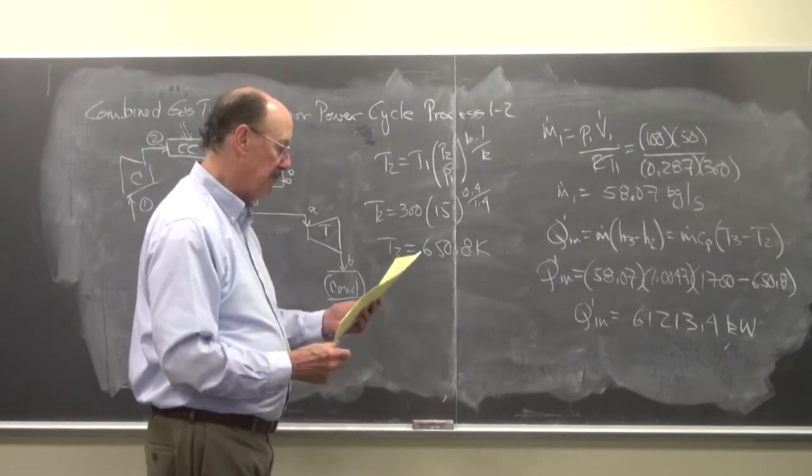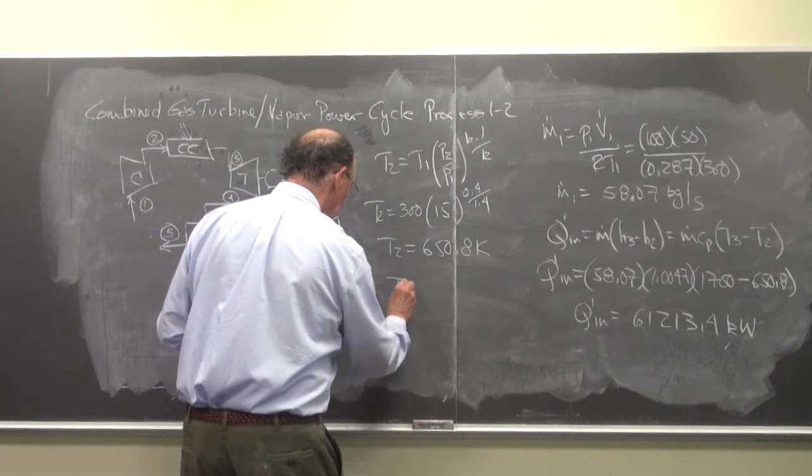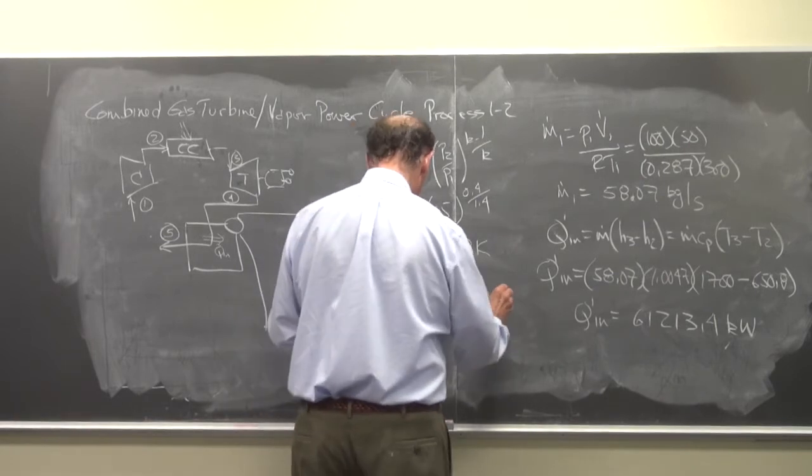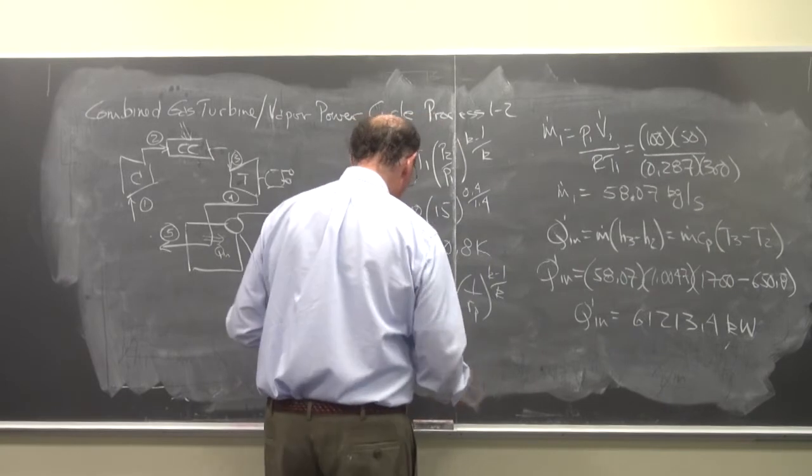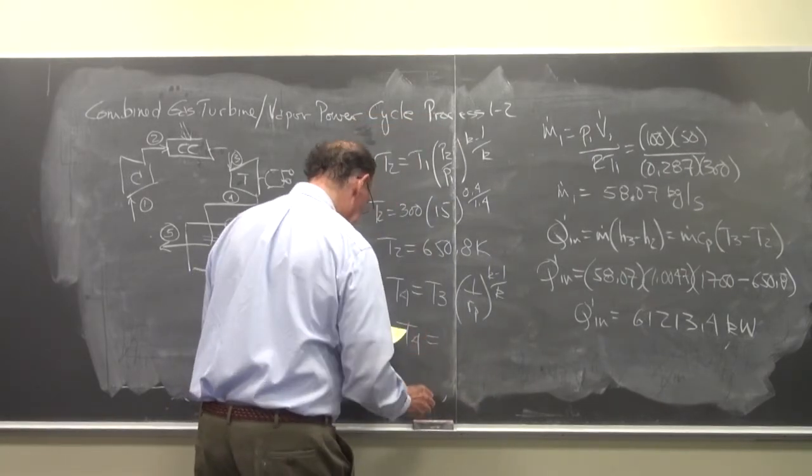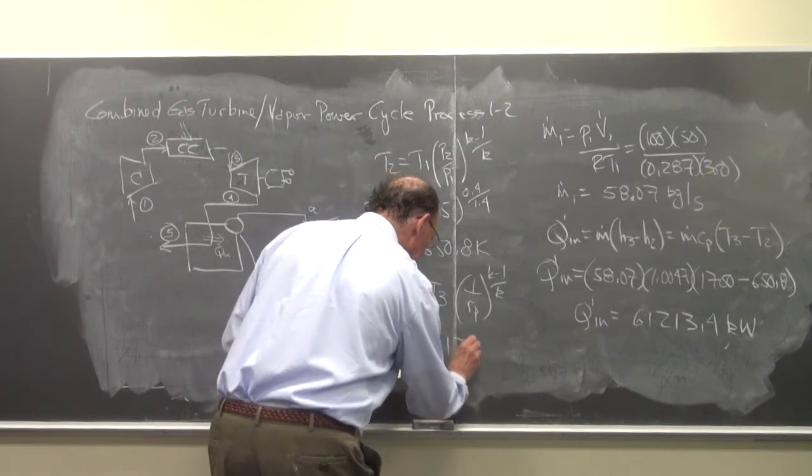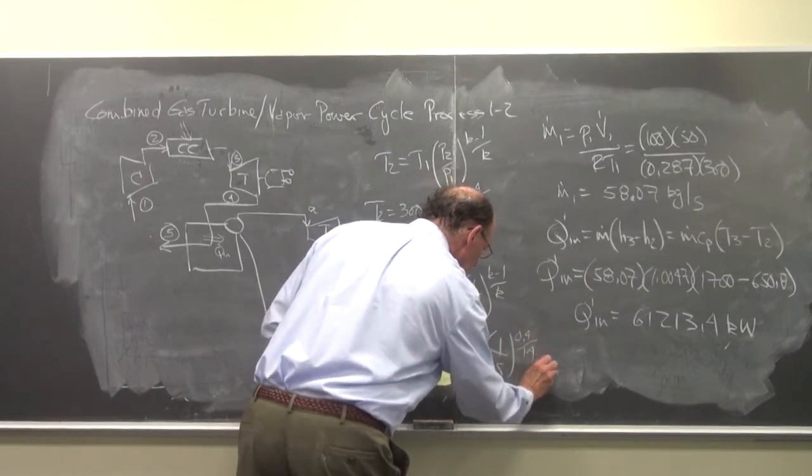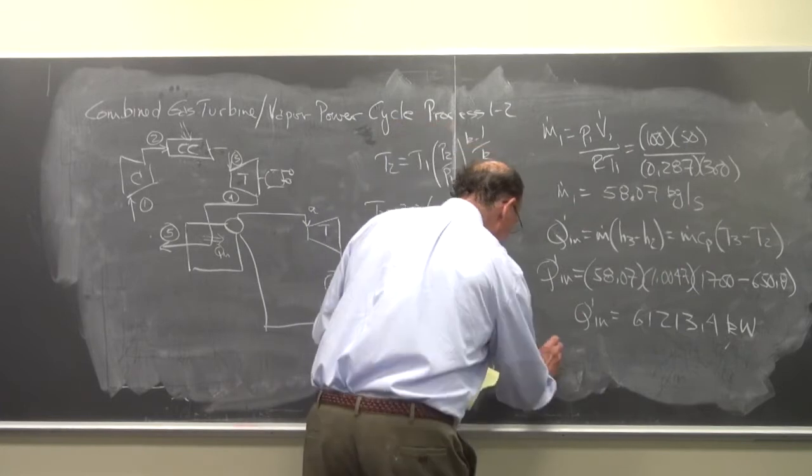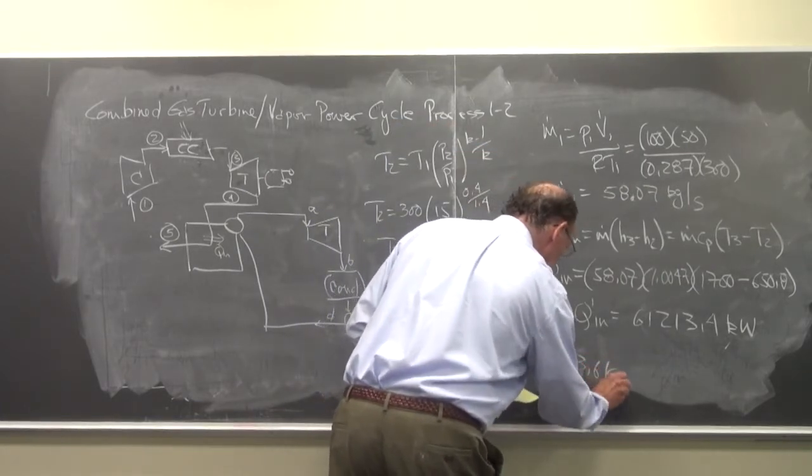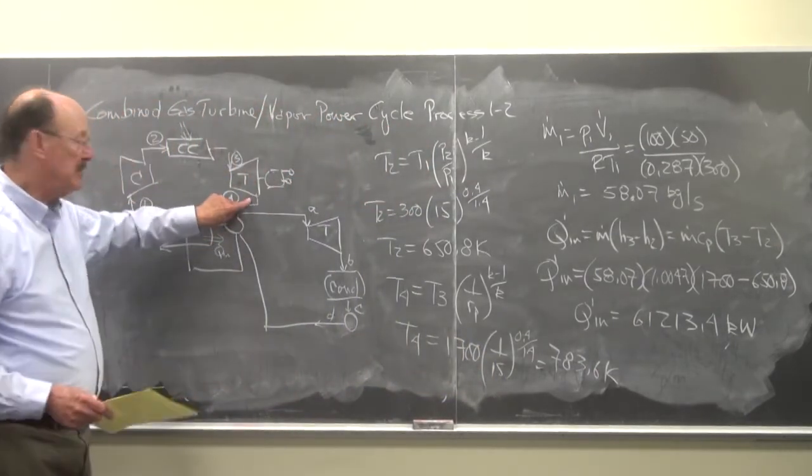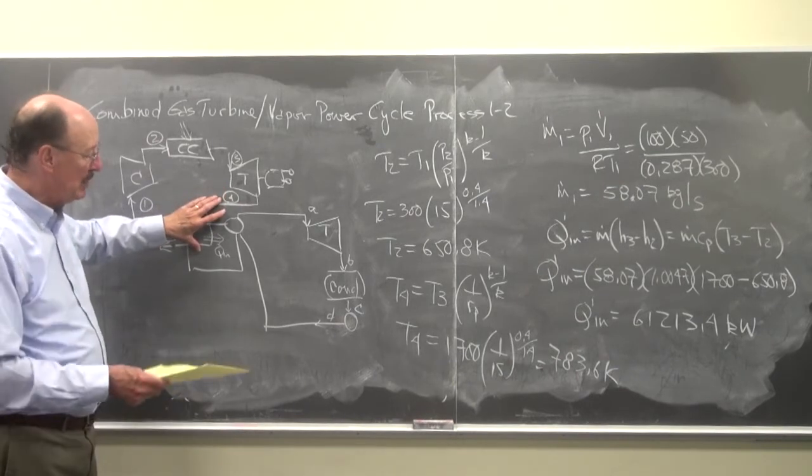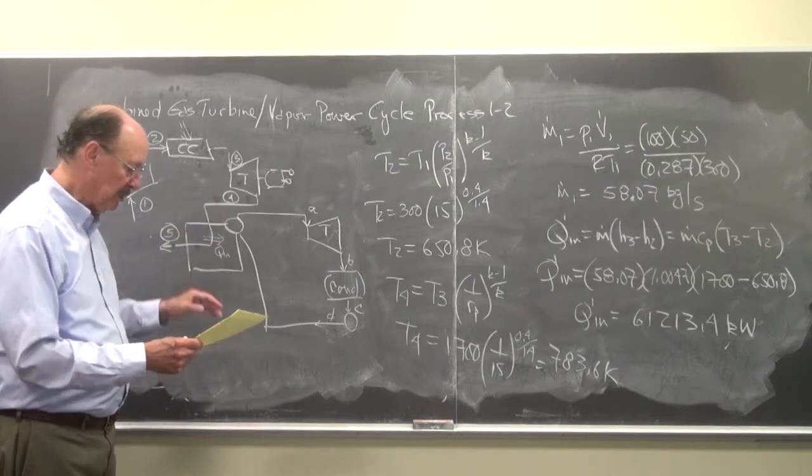And while I'm at it, so I don't forget, T4 is equal to T3 times 1 over R sub P to the k minus 1 over k. So T4 is equal to 1700 times 1 over 15 to the 0.4 over 1.4. So that's equal to 783.6 degrees K. So now I found T4. We know T5 was given. So I have this so I can find my heat per unit mass, and with the mass flow rate, I can find the total amount of heat flow.